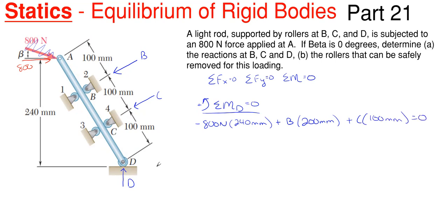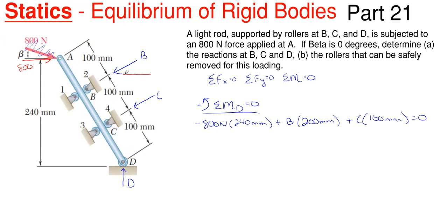I can't solve for B or C directly from this equation, but I can use another equation in terms of B and C and then use the substitution method. Since D is 100% in the Y direction, I'll save that for last. Summing forces in the X direction means D won't show up — only B and C's components will. I need to know the slope of the B and C resultant forces. The object has a height of 240 millimeters and a total length of 300 millimeters. Using the Pythagorean theorem, the horizontal dimension H equals the square root of 300 squared minus 240 squared, which equals exactly 180 millimeters.